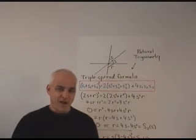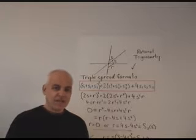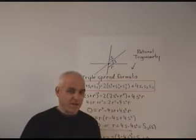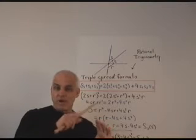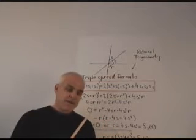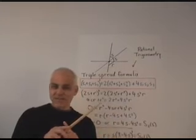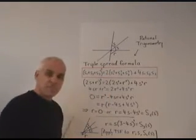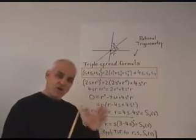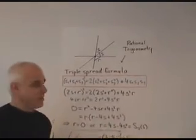Spread polynomials arise from rational trigonometry. In particular from the triple spread formula, which is usually a formula about three spreads formed by a triangle. Now if you have a triangle and you move one of those lines to the other vertex, you still have exactly the same three spreads. And you have three spreads formed by three concurrent lines. And they still obey the triple spread formula.